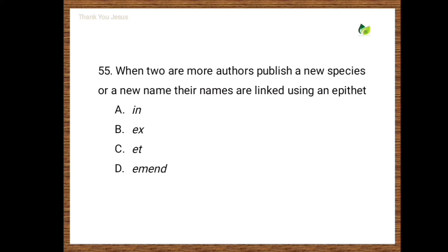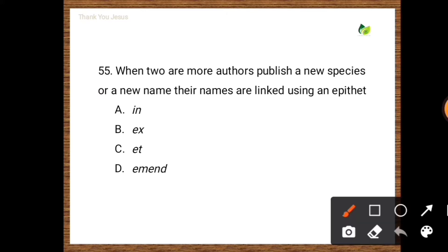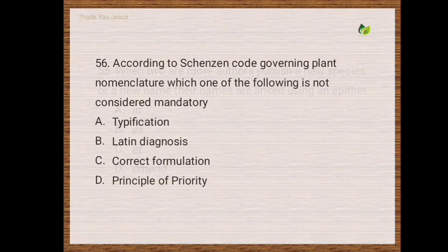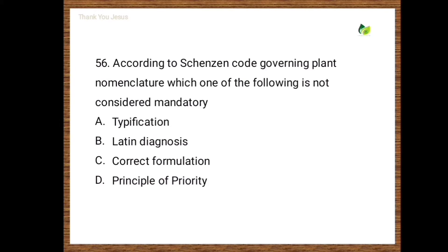Next question: When two or more authors publish a new species or a new name, their names are linked by using an epithet. Options are 'in', 'ex', 'at', 'emend'. According to the International Code governing plant nomenclature, which one of the following is not considered mandatory — typification, Latin diagnosis, correct formulation, principle of priority? The correct option is Latin diagnosis.